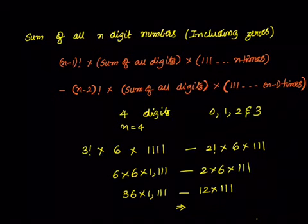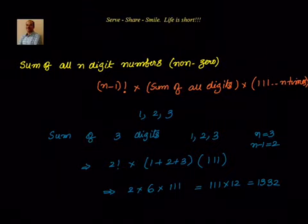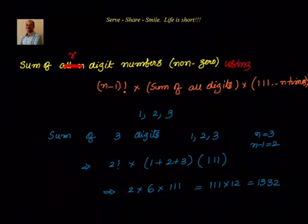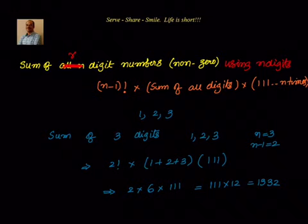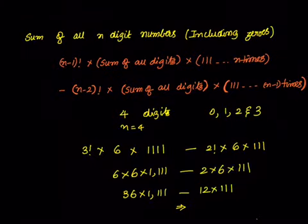Now let's generalize this further. Suppose we want the sum of all r digit numbers taking n digits into consideration. In the generalized formula, wherever we had (n-1) factorial we replace it with (n-1)P(r-1), and wherever we had (n-2) factorial we replace it with (n-2)P(r-2).